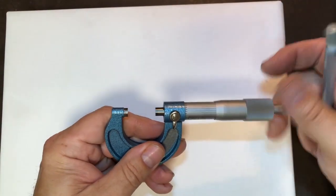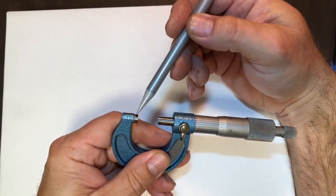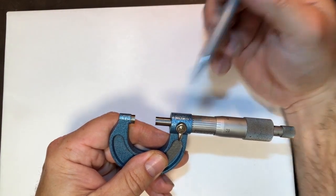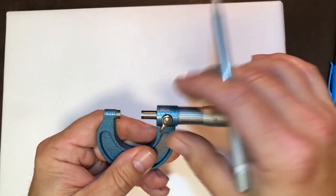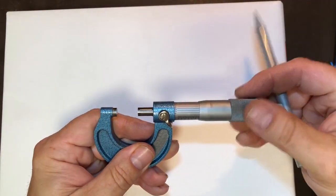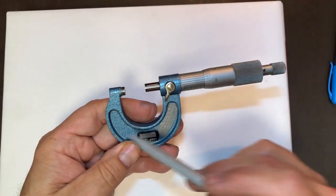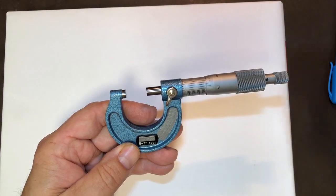This is the spindle, right here. Anyone know what this is called? You said anvil? Excellent. How about this guy? That would be the spindle lock, locks in place, unlocks. How about this guy here? The frame? Excellent. Those are the main parts.